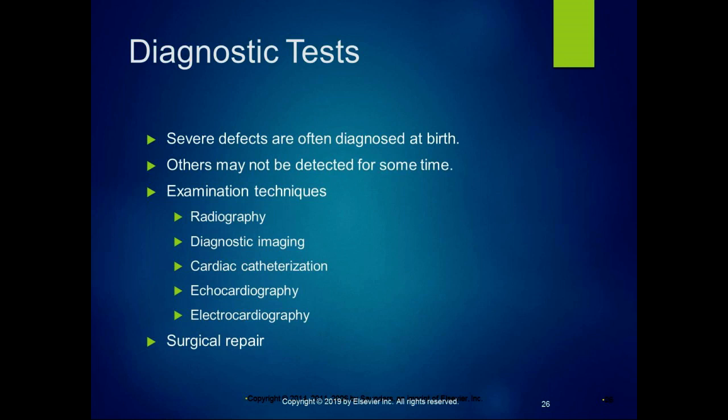Diagnostic imaging, including ultrasound and other modalities, is also used. Cardiac catheterization can sometimes be used to correct defects. Echocardiography is used to look at blood flow, and electrocardiography is used to look for dysrhythmias. Surgical repairs are another option — some severe defects diagnosed at birth can be surgically repaired, and that child can then go on to lead a normal life, which is a great outcome.